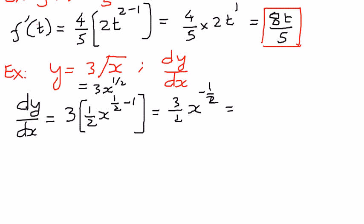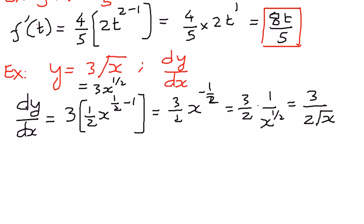Now I can express x to the power of negative one half as a positive exponent by bringing it to the denominator: 3 over 2 times 1 over x to the power of one half. We can also write x to the power of negative one half as square root of x in radical terms. Therefore, the answer is 3 divided by 2 times the square root of x, which is 3 over 2√x. That is the correct way of representing our answer.